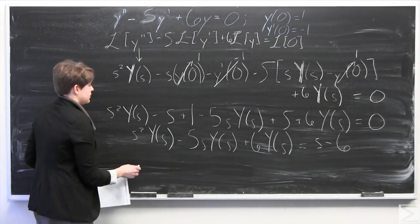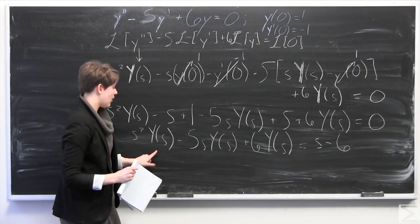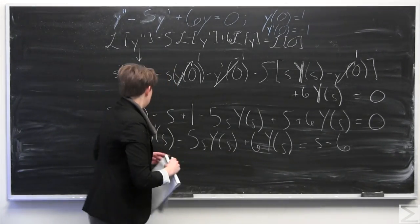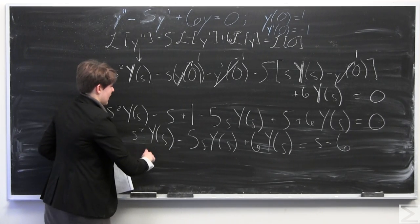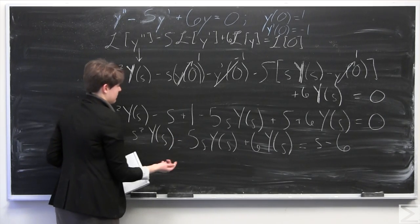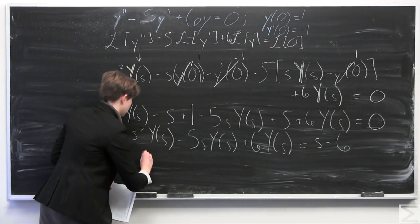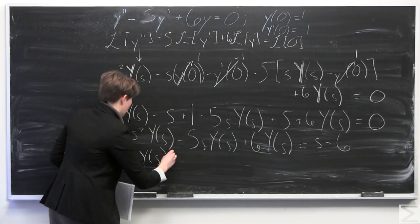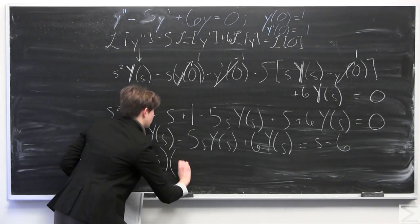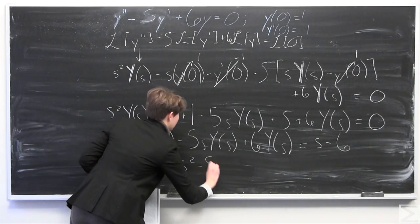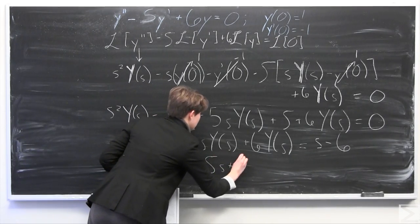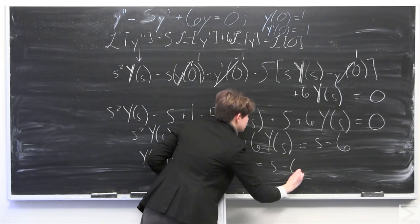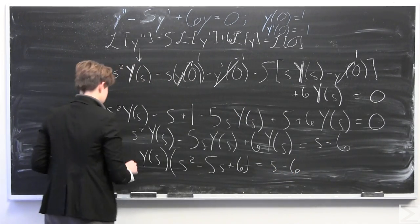In the next step, notice how all of these terms on the left have a common factor of big Y(s). So I'm going to factor out the Y(s), leaving Y(s) times the quantity s squared minus 5s plus 6 on the left, and s minus 6 on the right-hand side.